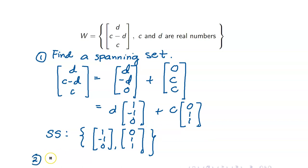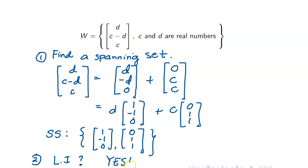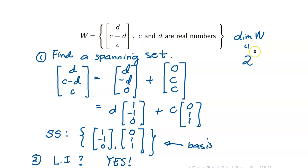Next, check for linear independence. Is it linearly independent? In this case, it is very easy to check because our set consists of two vectors only. To check if a set containing two vectors is linearly independent, you just have to check if they are scalar multiples of each other. Obviously, these two are not scalar multiples of each other. So yes, it is linearly independent, and therefore this set is actually a basis. Since this is a basis for W, the dimension of W is equal to 2.